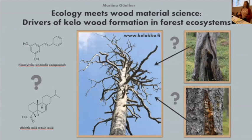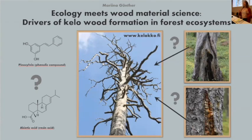Firstly, I will take samples from natural kello and other dead pines and compare their chemical composition. After that, I will take a closer look at some of the factors that have been proposed to be causing kello wood formation — so fire scarring and injuring of the pine. To do this, I will take samples from fire-scarred individuals and pine trees that were injured in different ways in an experimental setup, and then compare the chemical composition of these samples to wood material samples taken from natural kello.